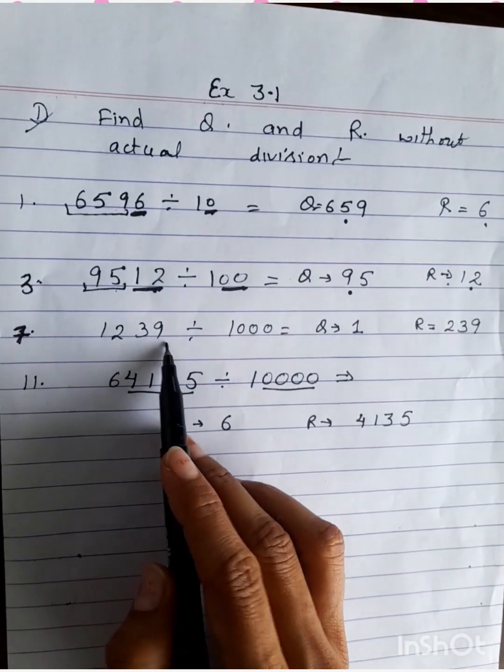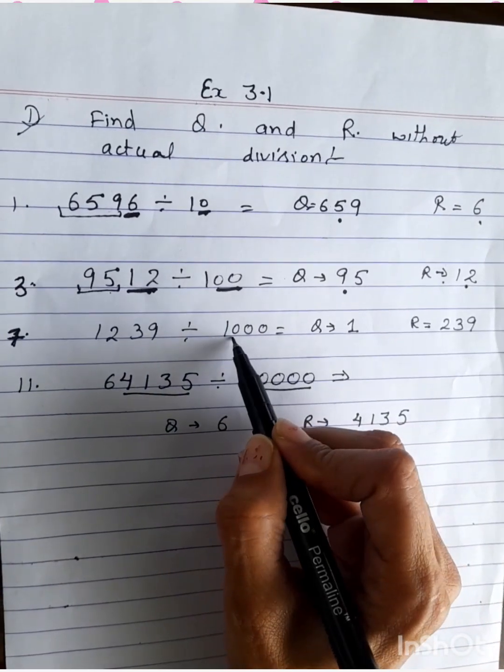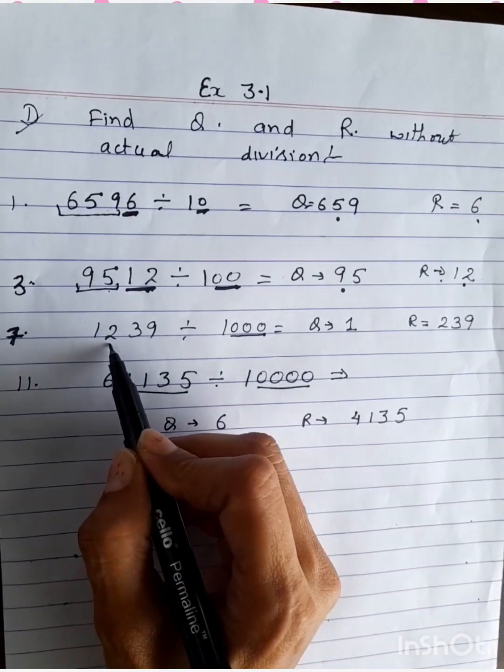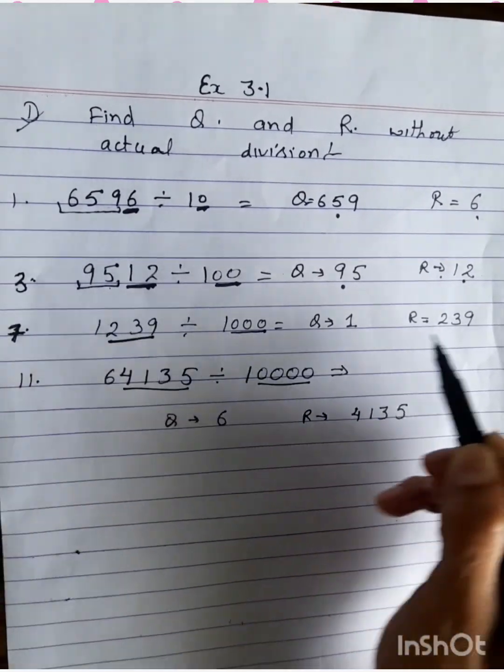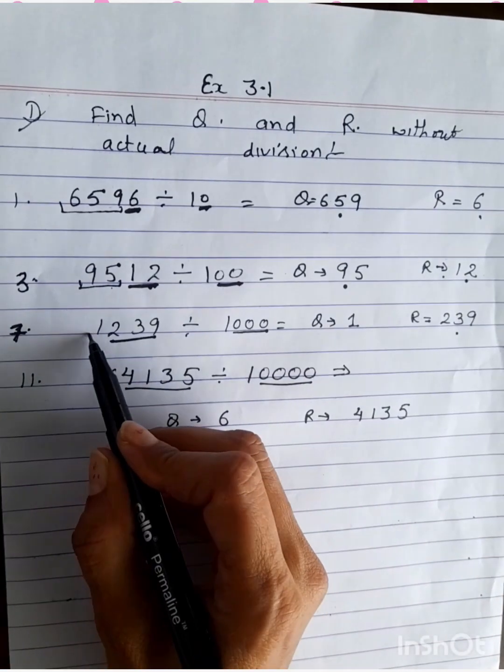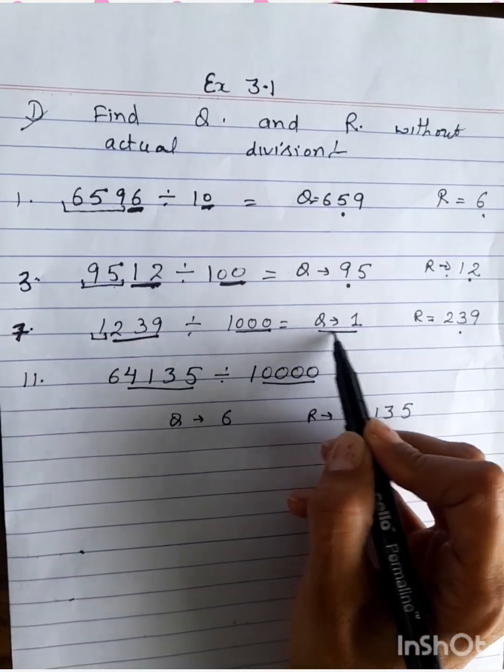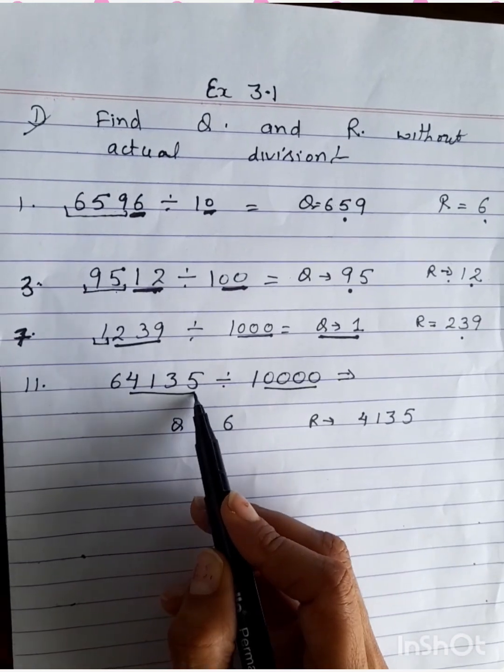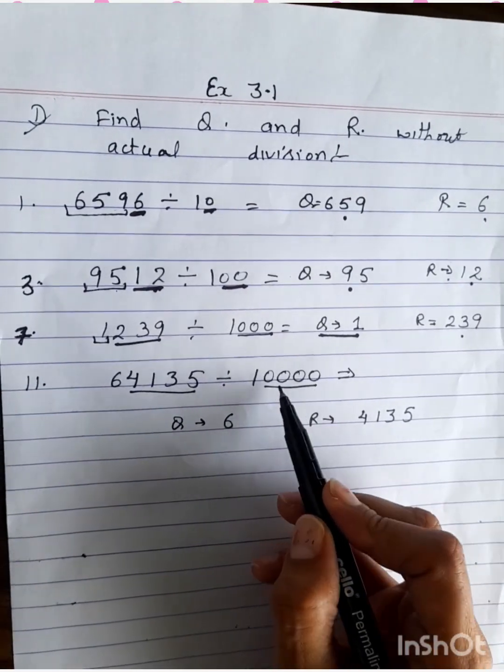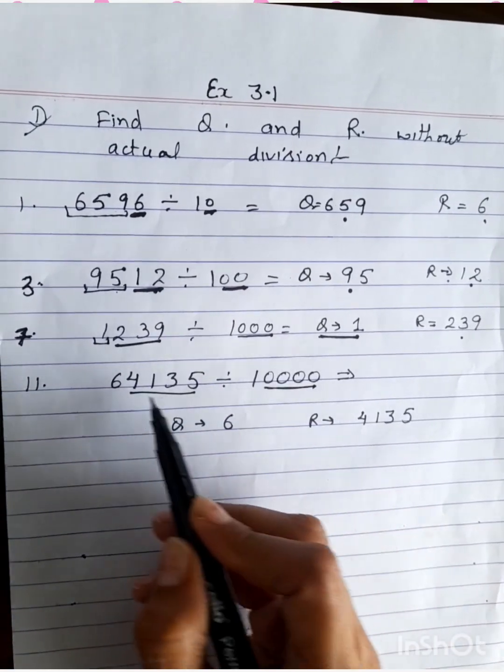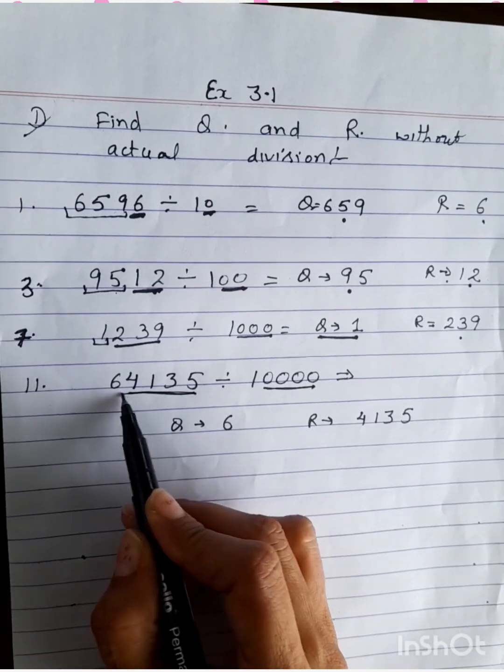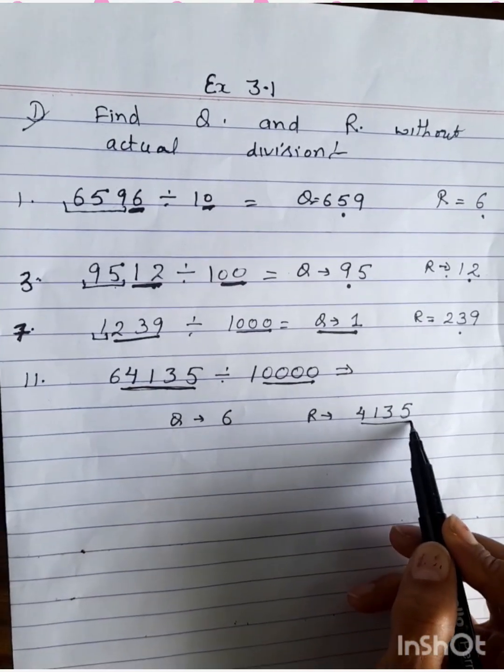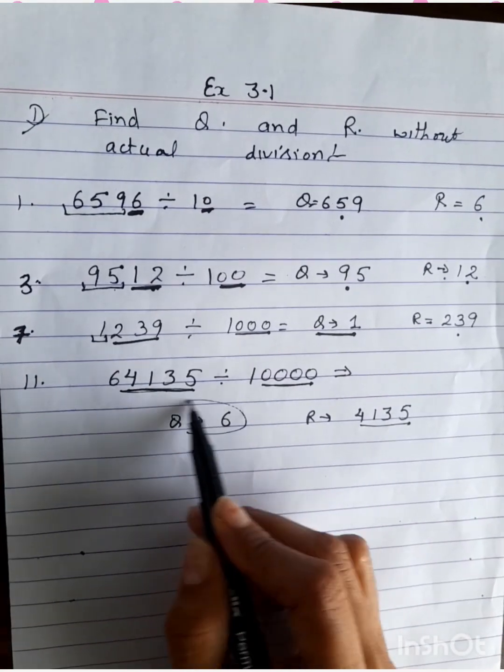Similarly, 1239 divide by 1000. 1000 have three zeros. So three digits from backside are remainder. And left one, quotient is 1. 64135 divide by 10000. Four zeros are there. So four digits from the backside are our remainder. And quotient is 6 only.